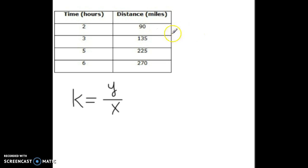What we do is we do y divided by x. So, I'm going to start with the easiest one, 90 divided by 2. So, k equals 90 divided by 2. Well, what's 90 divided by 2? It's 45, but what does this 45 mean? It's miles per hour, so that's 45 miles in one hour. So, you're going 45 miles per hour.